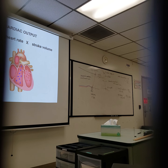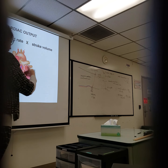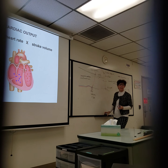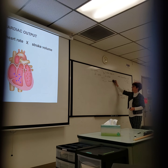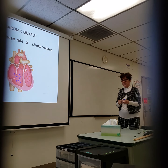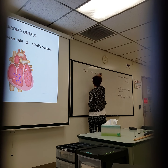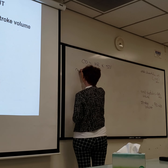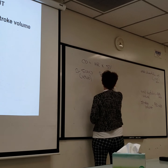Cardiac output is how much blood exits one ventricle per minute, and it should be the same on both sides. The equation is: cardiac output equals heart rate times stroke volume. If the average heart rate is 70 beats per minute and the average stroke volume is 70 mL, then cardiac output is 70 × 70 = 4,900 mL — approximately 5 liters per minute.